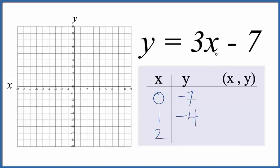And how about 2? 3 times 2 is 6. 6 minus 7, that's negative 1.